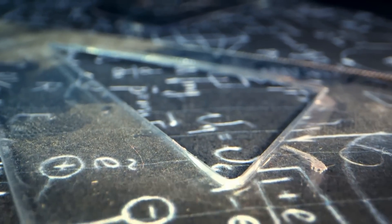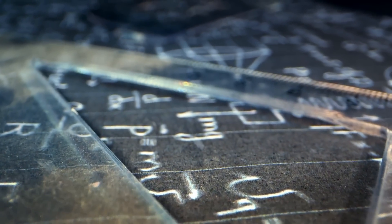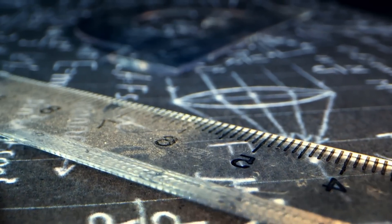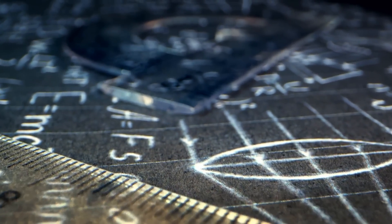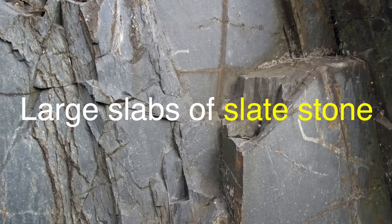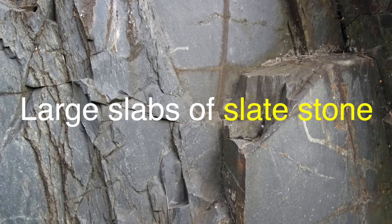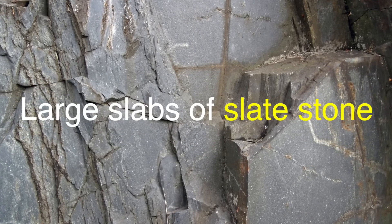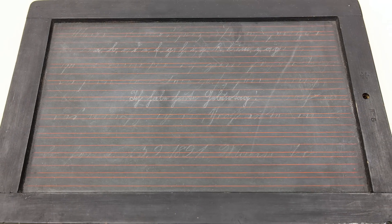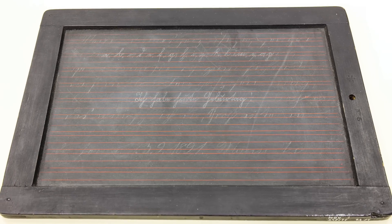Before we get into the color switch, it's important to understand the chalkboard's history. Believe it or not, chalkboards have been around for a long time. The earliest version dates back to the 19th century, when teachers started using large slabs of slate stone to write down lessons. The innovation was revolutionary at the time. Teachers no longer had to write lessons over and over again for small groups of students on individual slates. Instead, they could write once on a large, centralized surface for the entire class to see.